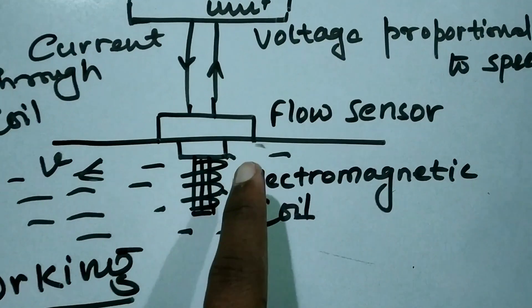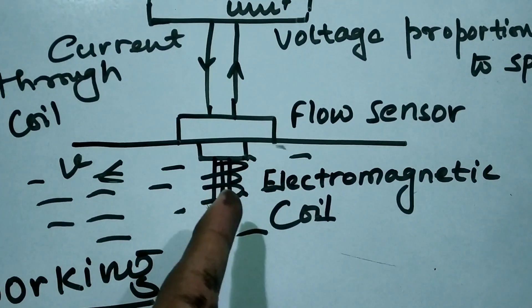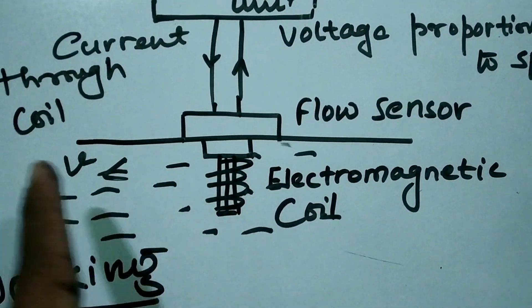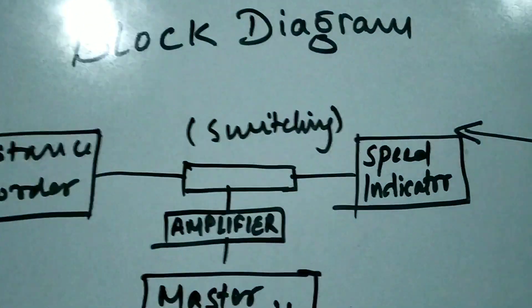Greater the speed of water across this coil, greater the electromagnetic force induced. As we discussed, the EMF is directly proportional to the speed of the vessel, and this will be displayed in the speed indicator.